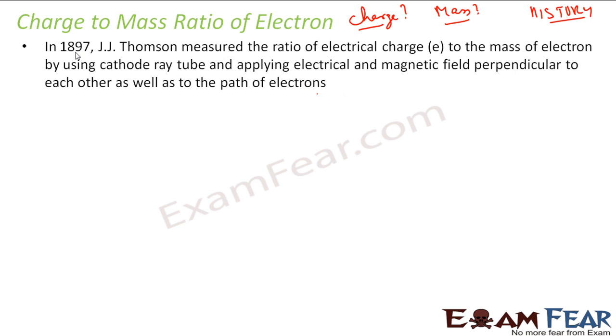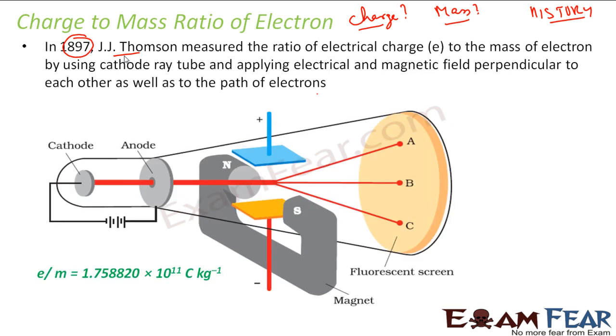So in that case, in 1897, till that time the charge of electron was not known. This guy Thomson, what he did was, he found charge to mass ratio. And how he found was, he used this cathode ray tube and then he applied electrical and magnetic field perpendicular to each other as well as to the path of electrons.